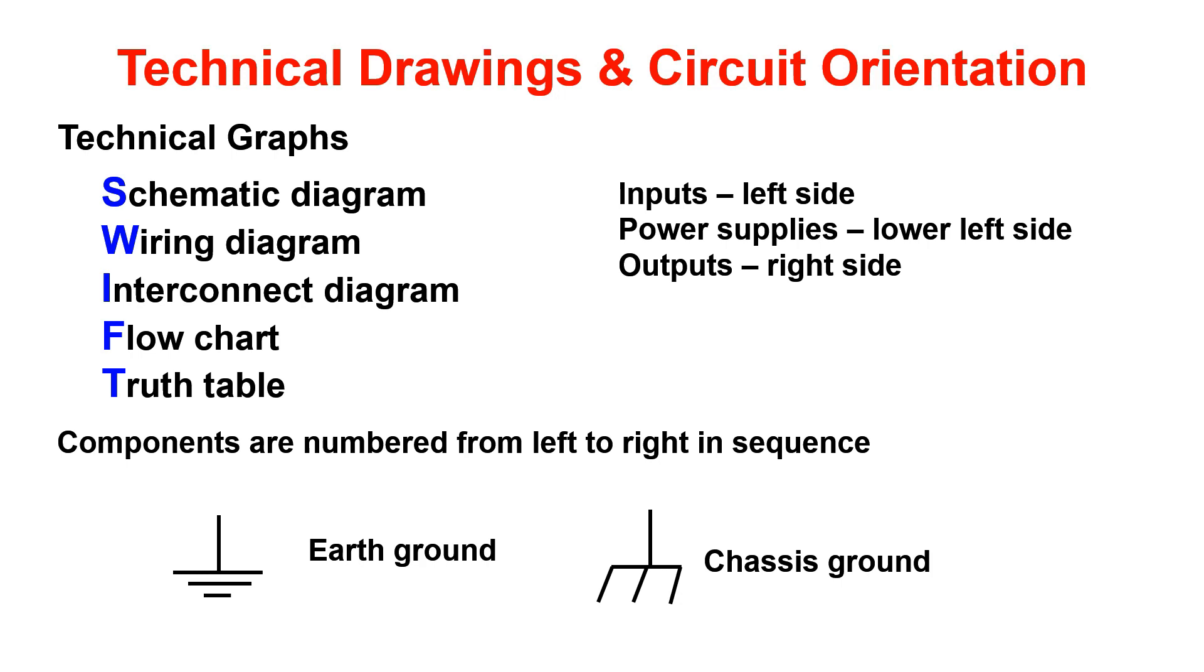Circuit orientation is how a circuit is laid out on a schematic. Inputs will be located on the left side and could be some sort of input device such as a keyboard or a mouse, gaming controller, or an output from another circuit board. Power supplies are located on the lower left side of the schematic and outputs are located on the right side of the schematic. These could be to another circuit board or a PC monitor, speaker, heater, light, or fan. This is only a small example of outputs. Components will be numbered from left to right in sequence, just like reading a book.